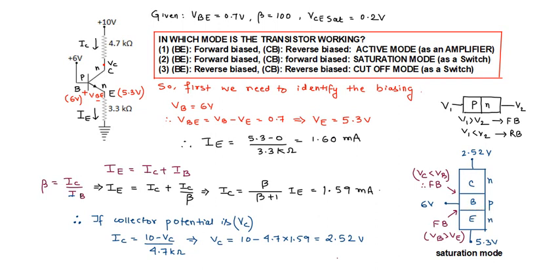For the collector-base junction, the collector is N-type at 2.52V and the base is P-type at 6V. Again the P-type material has a higher potential with respect to the N-type, so the collector-base junction is also forward biased. Since both junctions are forward biased, we can say the transistor is working in saturation mode. This is the basic method to determine which mode a transistor is operating in.